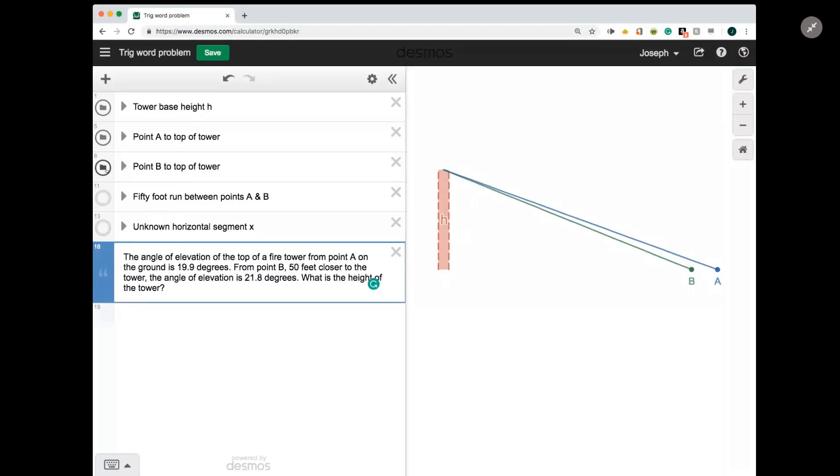So a couple other things I'll point out. One is that, as I've said, there's a 50 foot length between A and B. That's that little orange line. And over here I've got another line, which I'll call the distance x, which is the distance between the base of the tower and point B.